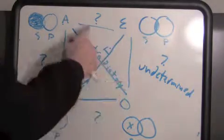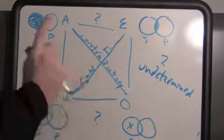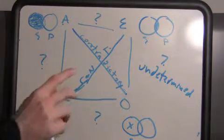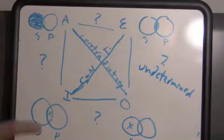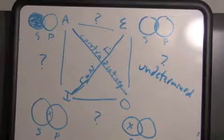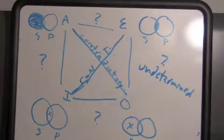In next week's video, when we go over the traditional square of opposition — Aristotle's square — he actually gives us logical definitions for those unknown relationships. The reason we don't have them in the modern square is because of the existential fallacy. I'll get into that in detail next week.